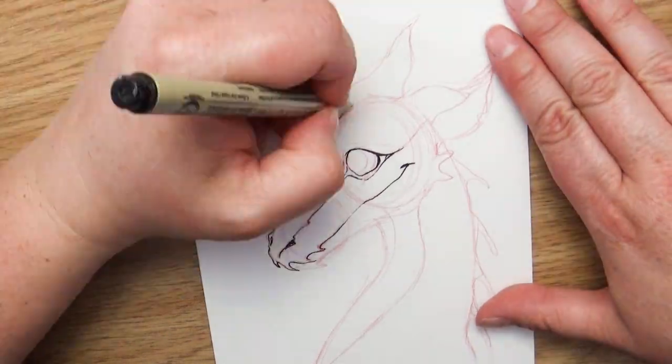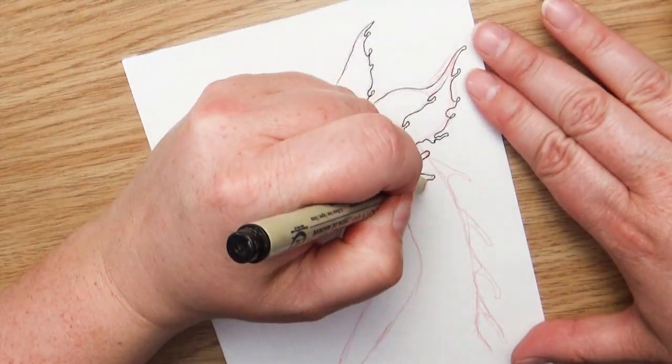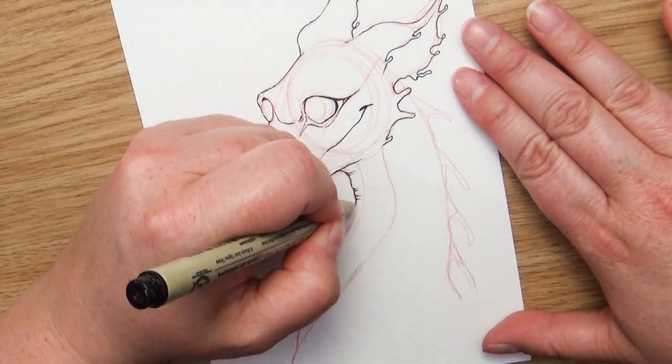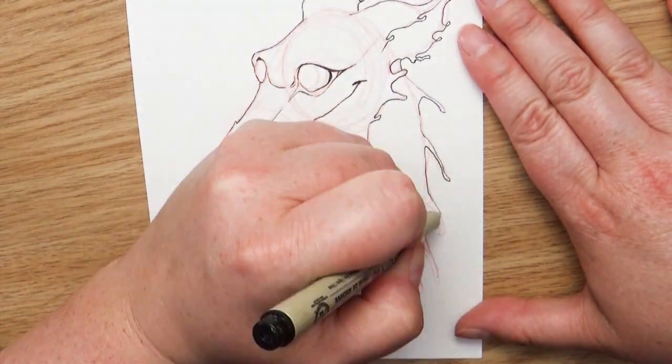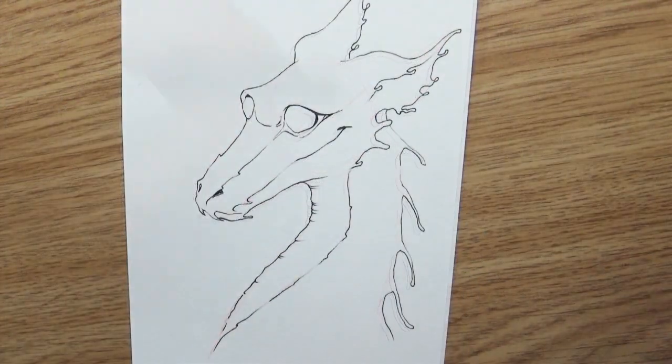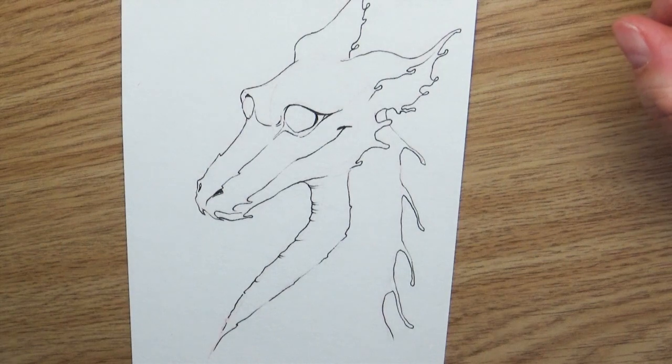So if you chose like a desert dragon, you might want to think of features that desert animals have. For this one I wanted to make it a deep cave dragon, like one of those caves that are miles into the earth where there's just no sunlight or hardly any light gets into them. What would these dragons look like?